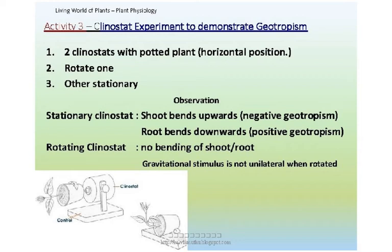This is again showing the experiment on shoots: two clinostats with a potted plant in horizontal position — rotate one, leave the other stationary. Observation: the stationary clinostat — the shoot bends upward (negative geotropism) and the root bends downwards (positive gravitropism). The rotating clinostat — no bending of shoot or root, because the gravitational stimulus is not unilateral when rotated.